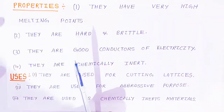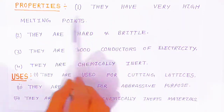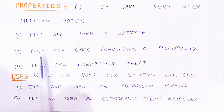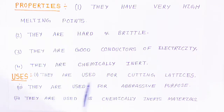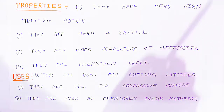Once prepared, interstitial carbides have the following properties: they have very high melting points, they are hard and brittle, they are good conductors of electricity, and they are chemically inert. Their uses include cutting lattices, abrasive purposes, and use as chemically inert materials. They are very hard, which makes them useful for these applications.